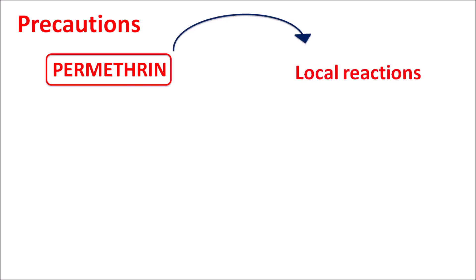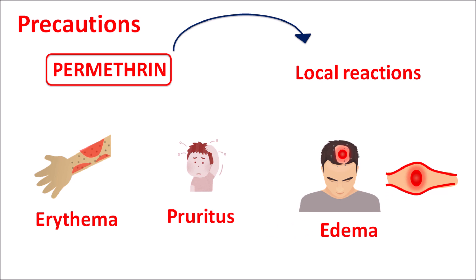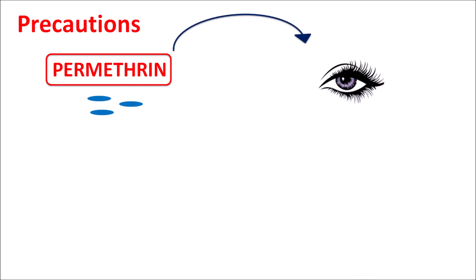Permethrin can be given either as cream or lotion and is applied topically. When applied topically, it can produce some local reactions resulting in hypersensitive reactions. This drug can initially increase symptoms such as erythema, pruritus, resulting in increased itching, and it can also produce some edema. All these symptoms are initially increased — that is why when this drug is used for the treatment of scabies, for the first three weeks the symptoms may be increased due to local reactions produced by permethrin.